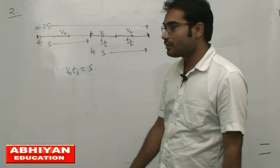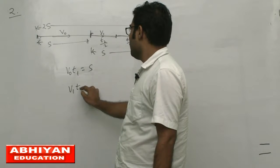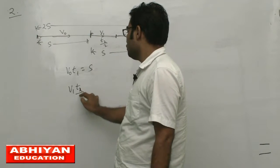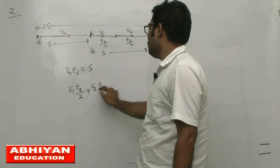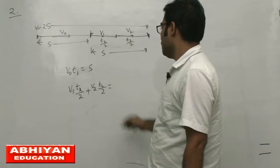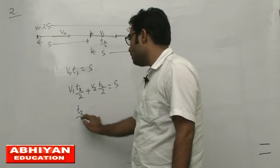v0 into t1 equals s. And v1 into t2 by 2 plus v2 into t2 by 2 equals s. Therefore, t2 by 2 times v1 plus v2 equals s.